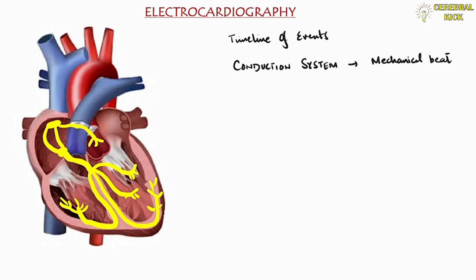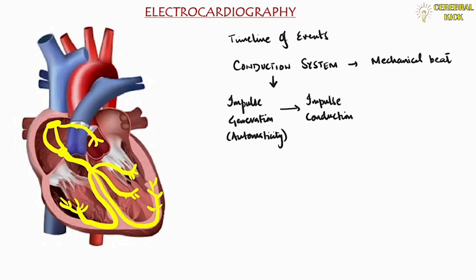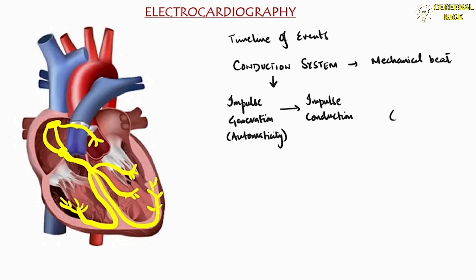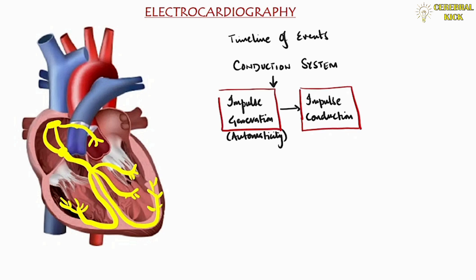The timeline of events follows from the conduction system distributing the current throughout the heart, leading to the mechanical beat. In the conduction system we have impulse generation — the automaticity or spontaneous depolarization of the heart — and we have impulse conduction. Let's go to impulse conduction first and then jump to impulse generation.